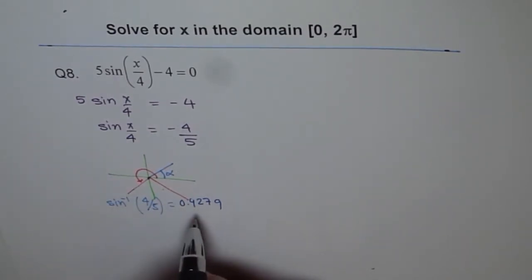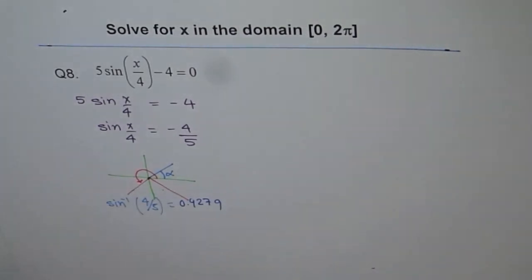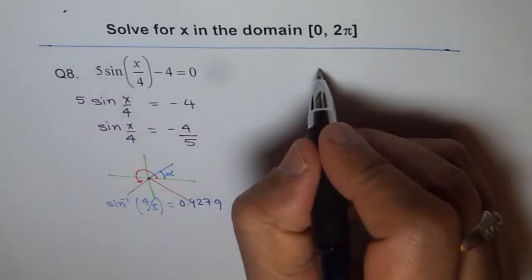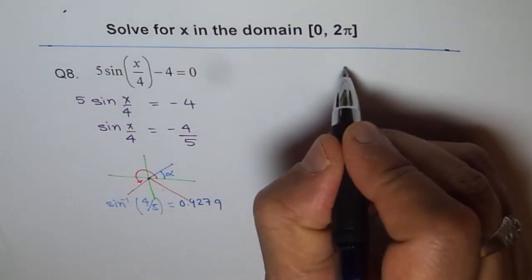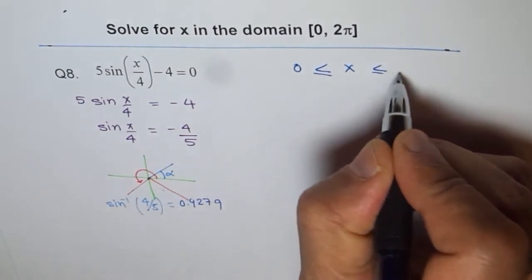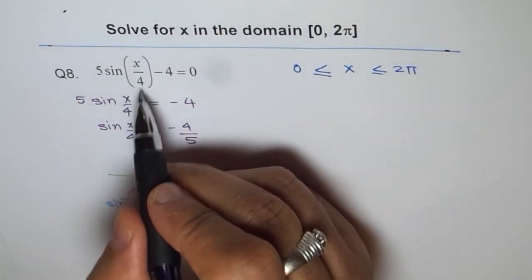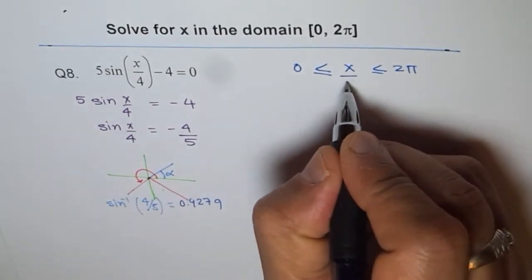But before writing actual answers, let's also check our domain. Now what is our domain? If you see, the domain is defined as x should be between 0 to 2π. And our argument here is x divided by 4.